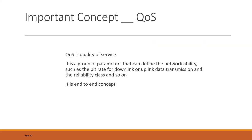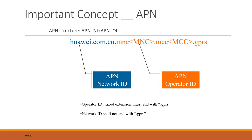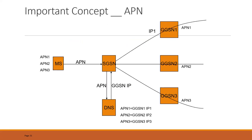More advanced QoS concepts like preemption capability and preemption vulnerability we will look at afterwards. There are two types of DNS: one is internal DNS, which performs the APN-to-GGSN IP resolution function, and the other is external DNS.